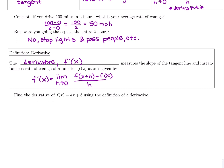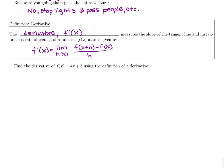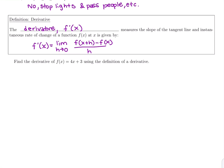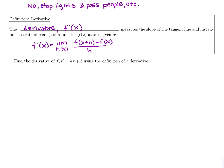Let's use this definition of a derivative to take our first derivative. We have the function 4x plus 3, and we want to plug into the formula: the limit as h goes to zero of f(x+h) minus f(x) all over h. We'll do four steps. The first step is to figure out what f(x+h) is. Just like f(0) would be 4 times 0 plus 3, or f(10) is 4 times 10 plus 3, we replace x with x+h. Distributing gives us 4x plus 4h plus 3.